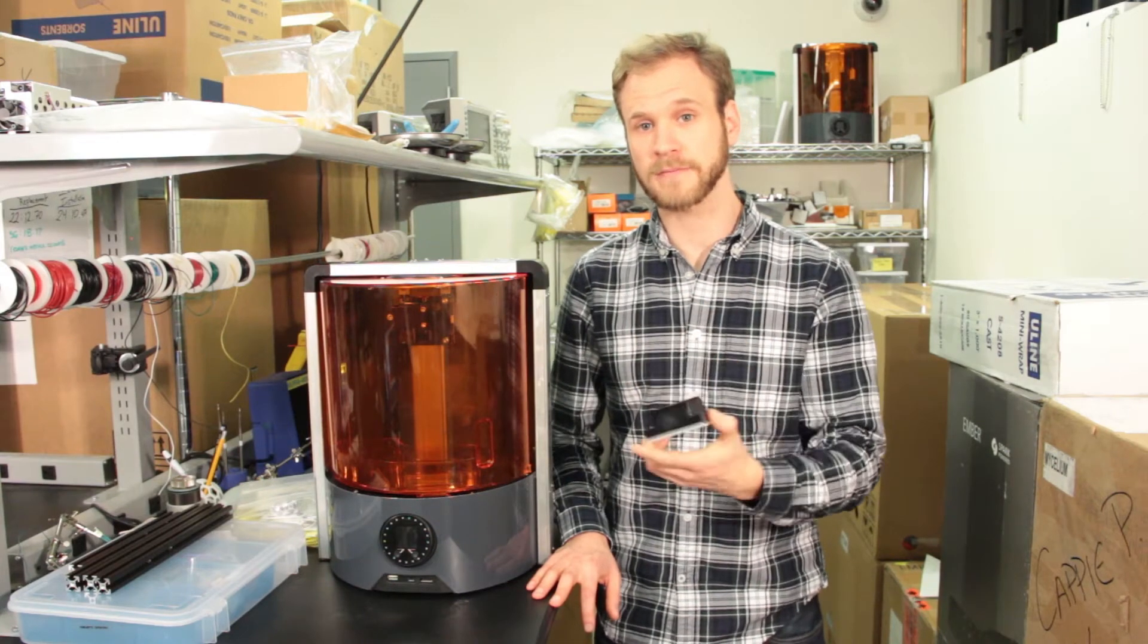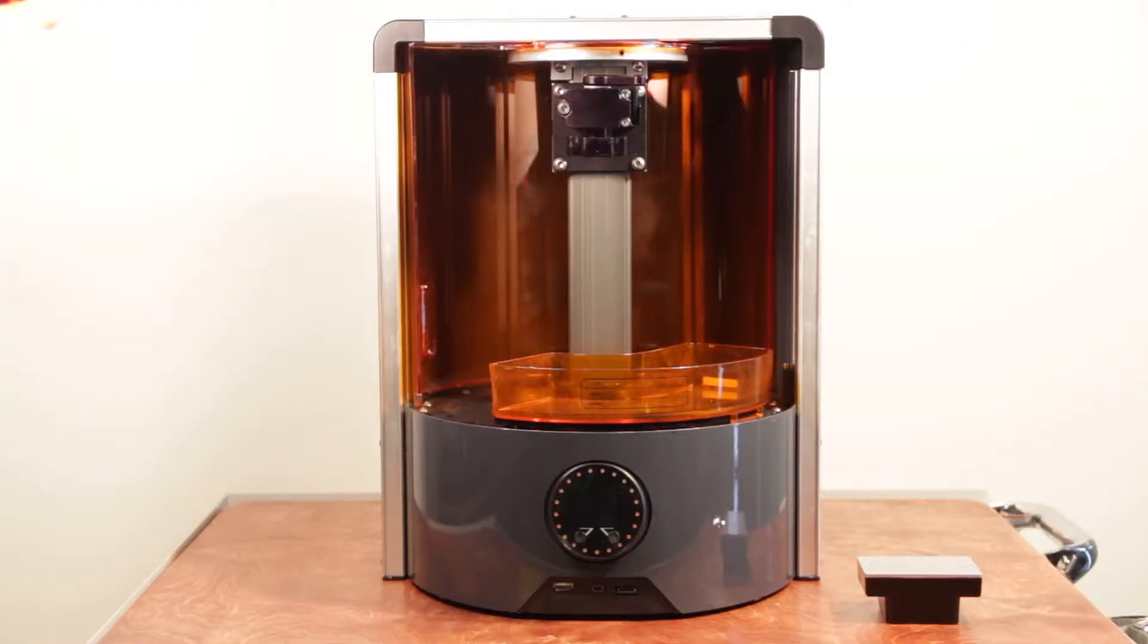Here's how to calibrate the build head for a print on Ember. We're starting with a print file loaded and a resin tray filled with resin.